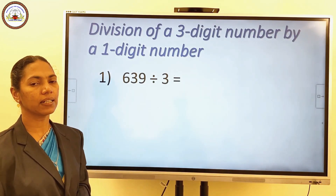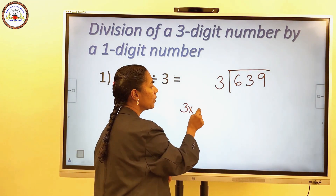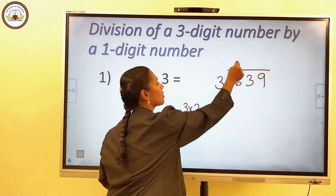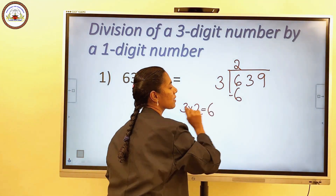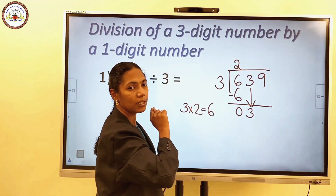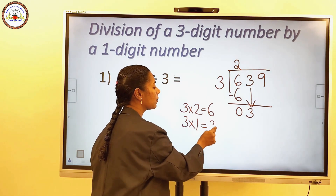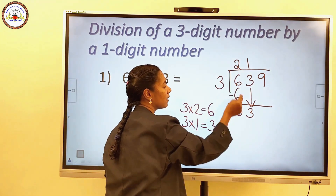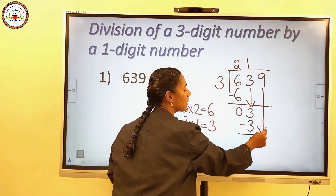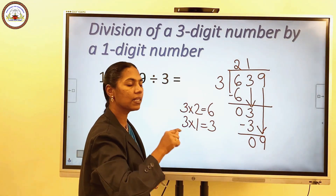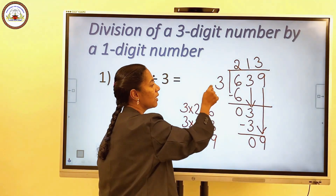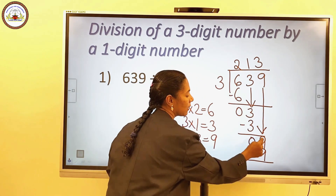Divide 639 by 3. Divide 6 by 3: 3 into 2 is 6, so write 2 here. Answer 6 below this 6, subtract: 6 minus 6 is 0. Bring down the next digit, 3. How many times is 3 in 3? Only one time. 3 into 1 is equal to 3, so write 1 in the tens place. 3 minus 3 is 0. Bring down the next digit, 9. How many times is 3 in 9? 3 times. 3 into 3 is equal to 9, so write 3 in the ones place. 9 minus 9 is 0.